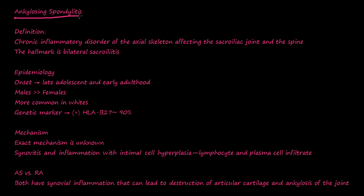Ankylosing spondylitis — what's the definition? It's chronic inflammation in the axial skeleton, which is the spine. It affects the sacroiliac joints and the spine, so it's chronic inflammation in the spine and the SI joints mainly. The hallmark is bilateral sacroiliitis — that's the hallmark feature.